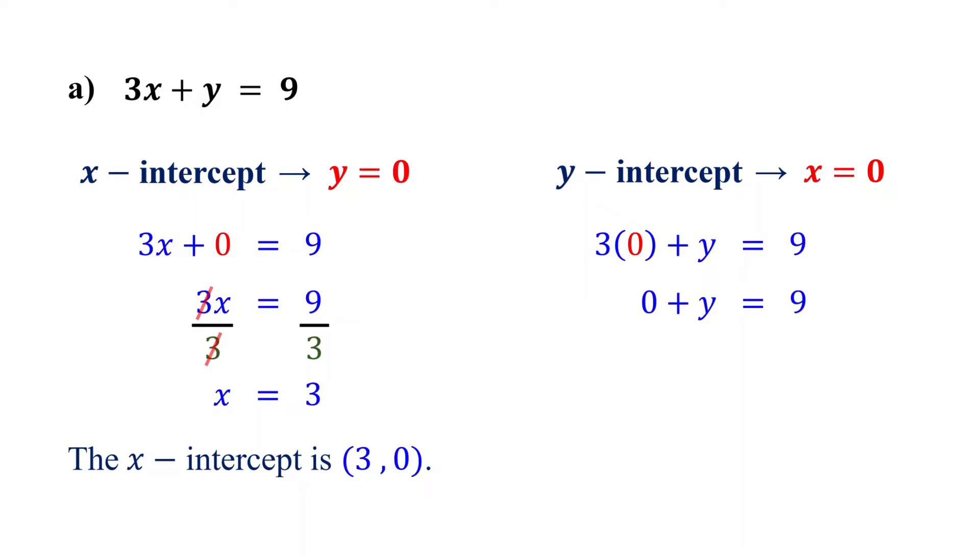3 times 0 is 0, so we are left with y equals 9. Therefore, the y-intercept is the point (0, 9). This is where the line crosses the y-axis.